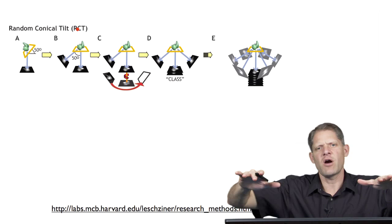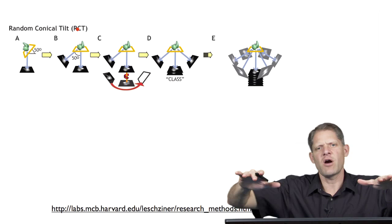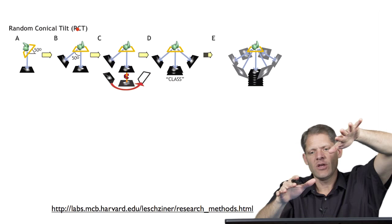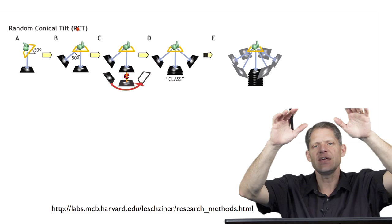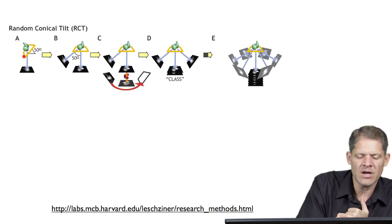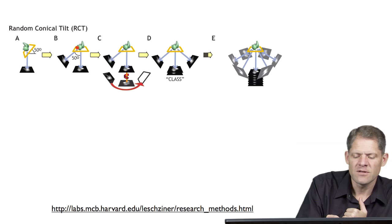The idea of a random conical tilt is you take a field of particles frozen in the ice, tilt it to about 50 degrees, and take a projection image through it. After you take that image, you rotate the field of particles into an untilted orientation and take another projection image. This is what's being depicted here — you first tilt the field up to 50 degrees and record an image, then untilt the field of particles and record a second image.